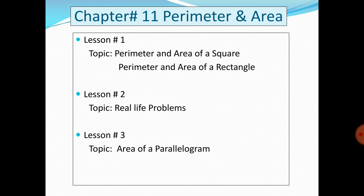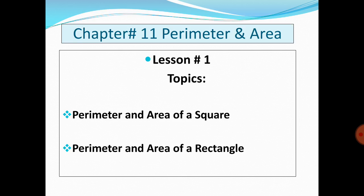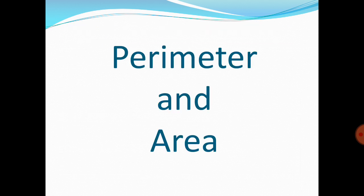Chapter 11 will consist of three lessons. Lesson 1 will cover perimeter and area of a square and of a rectangle. Lesson 2 will cover real-life problems. Lesson 3 will cover area of a parallelogram. Right now we are going to discuss Lesson 1: perimeter and area of a square and of a rectangle.